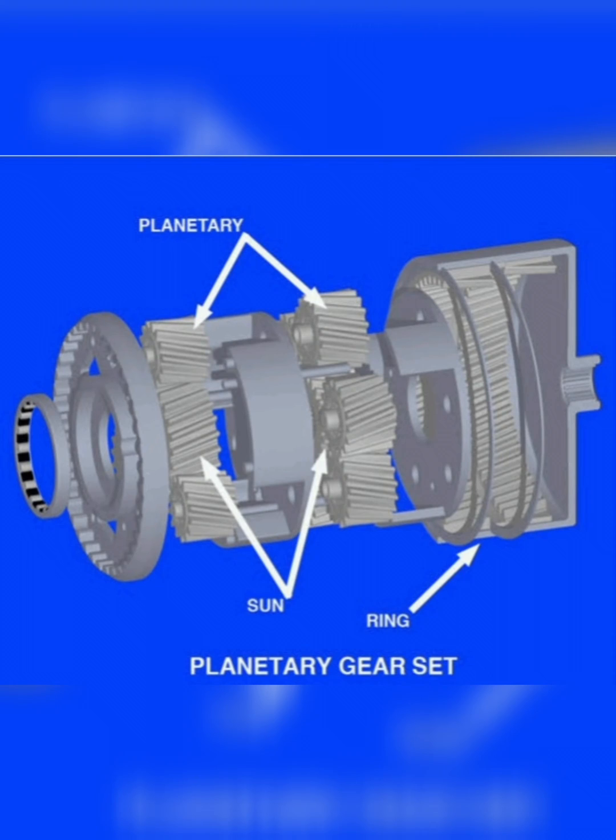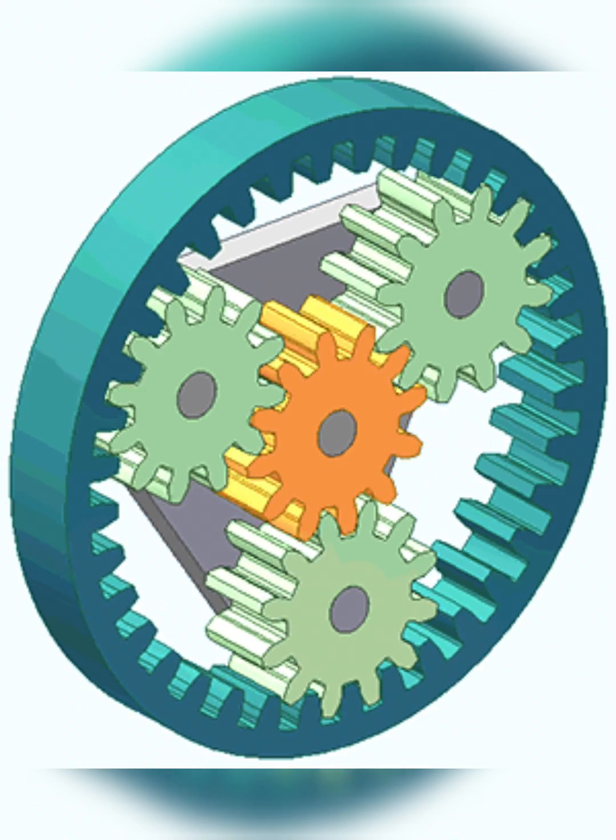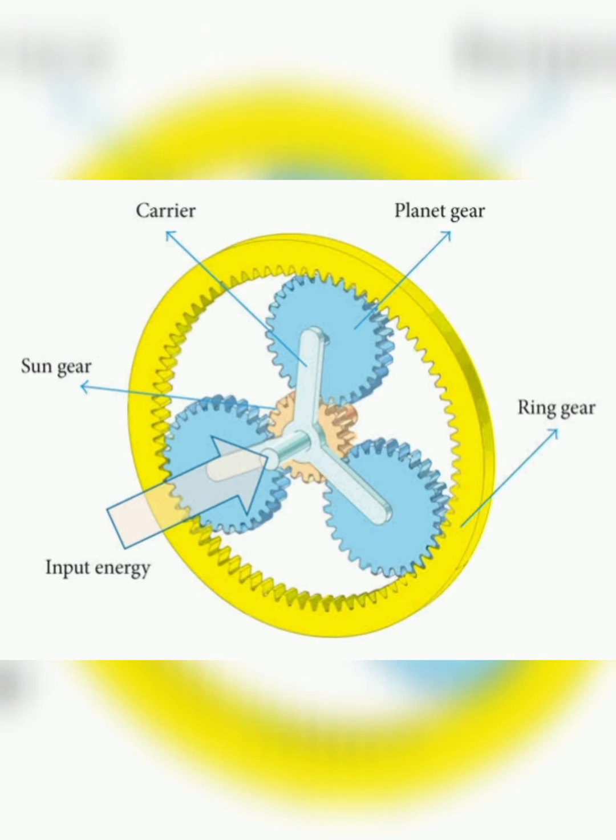An example of how this can work is when the sun gear rotates and the planet gears are held in place.